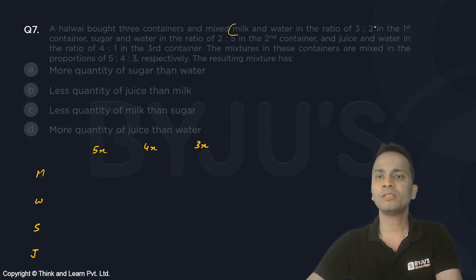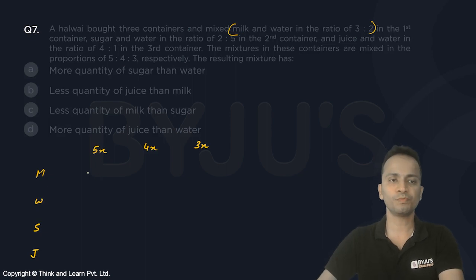First, the first container has milk and water in the ratio 3 is to 2, so I'll divide 5x in the ratio 3 is to 2. Three portions is milk and two parts water, so 5x divided in 3 is to 2 means milk will be 3x and water will be 2x.